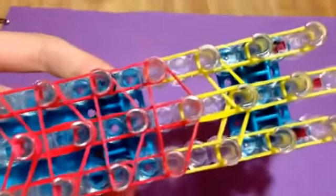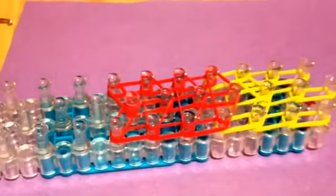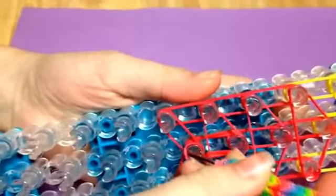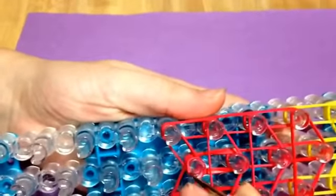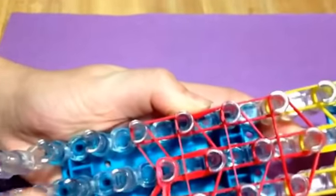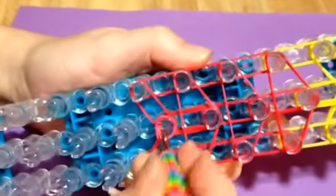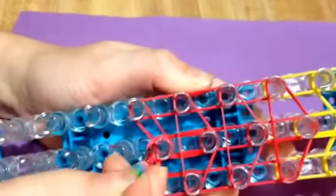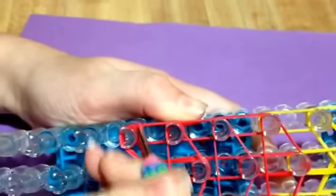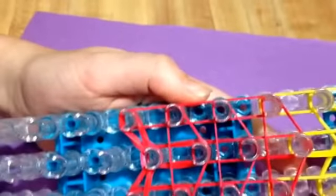Now, we can start looping the bands. So, get your hook. You're going to go into this peg and get the top two, and you're going to bring them out to the side. Like that. Go back in, get those top two bands, and bring them out to that side. Like that.